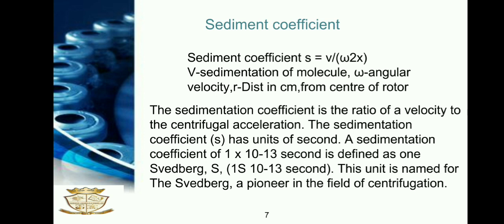Next is the sedimentation coefficient. The sedimentation coefficient s is equal to v divided by ω²x, where v is the sedimentation velocity of the molecule, ω is the angular velocity, and r is the distance in centimetres from the centre of the rotor. The sedimentation coefficient is the ratio of sedimentation velocity to the centrifugal acceleration. The sedimentation coefficient has units of seconds. A sedimentation coefficient of 1 × 10⁻¹³ seconds is defined as 1 Svedberg. This unit is named for Svedberg, a pioneer in the field of centrifugation.